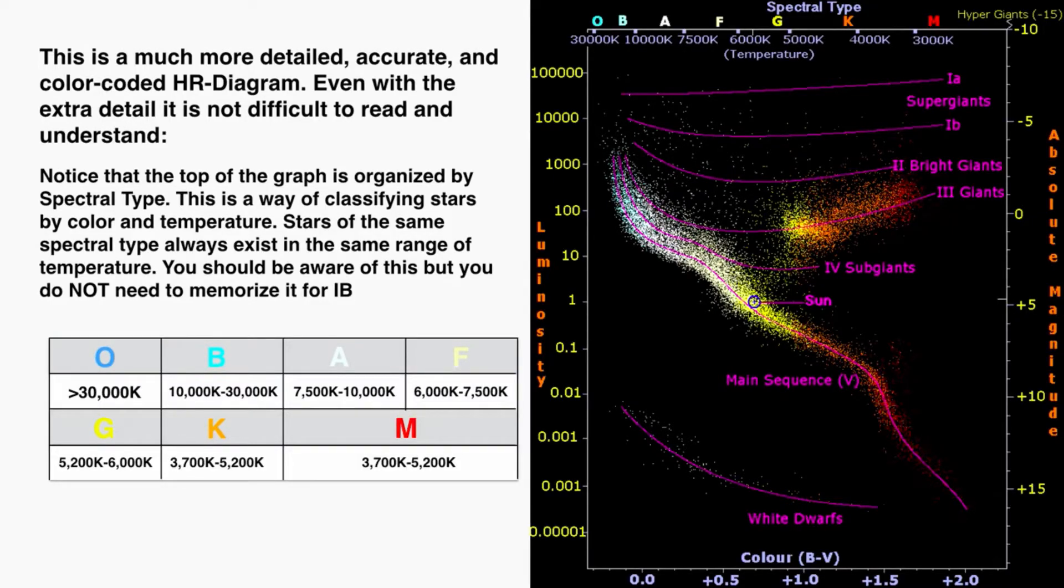The top of the graph is also organized by spectral type. This is a way of classifying stars by color and temperature. Stars of the same spectral type always exist in the same range of temperature. You should be aware of this, but you do not need to memorize it for IB physics specifically.